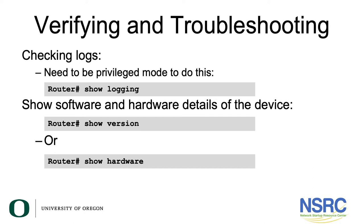You can also show the software and hardware details of the device by simply typing 'show version' or 'show hardware'.